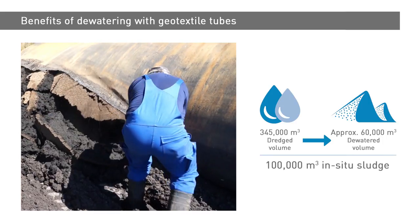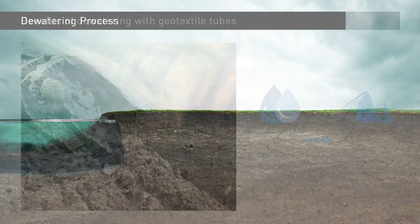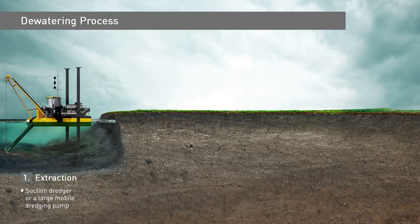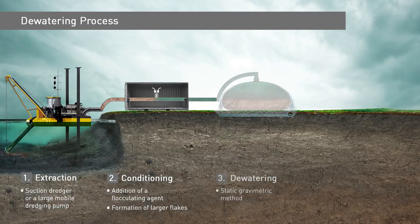Advanced dewatering ensures that the quantity for removal is much smaller than the original sludge volume. The tube dewatering process can be broken down into four steps. The sludge is first extracted by means of a suction dredger or a large mobile dredging pump. In the second step, the sludge is conditioned through the addition of a flocculating agent that causes the suspended particles to clump together into larger flakes, also called flocks. After the sludge has been conditioned and has travelled a sufficiently long mixing distance, it is pumped into the dewatering tube.